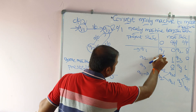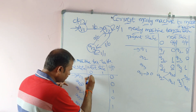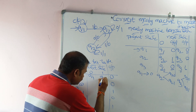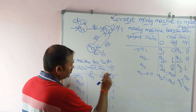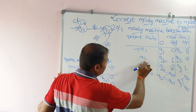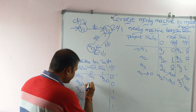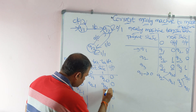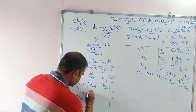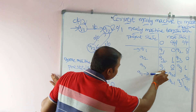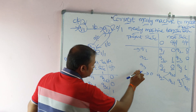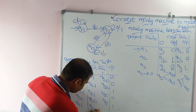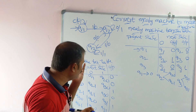Now let us fill the next state column. q1 on zero goes to q1. q1 on one goes to q20. q20 on zero goes to q21. q20 on one goes to q30. q21 on zero goes to q21 (self loop). q21 on one goes to q30. q30 on zero goes to q20. q30 on one goes to q31. q31 on zero goes to q20. q31 on one goes to q31.